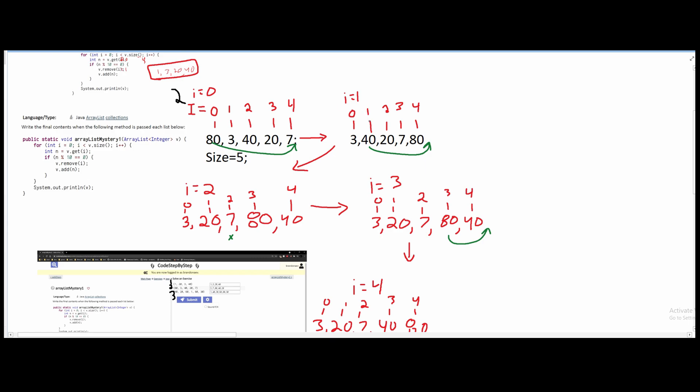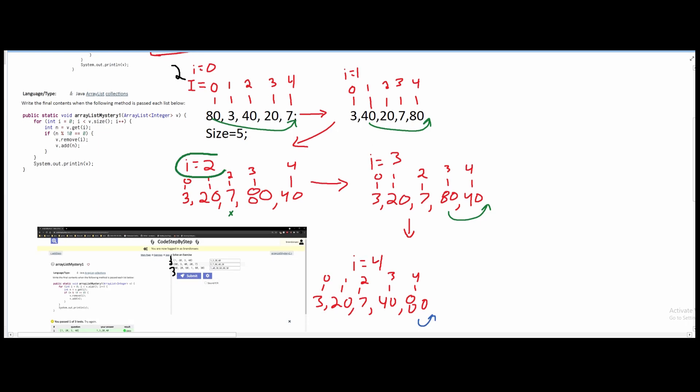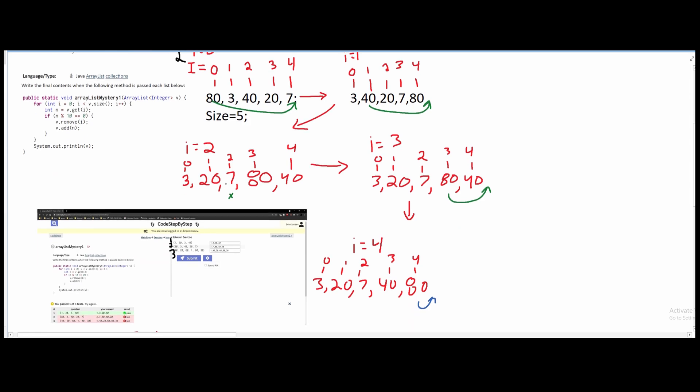Now we're going to look at index 1. Index 1 is also even, it's 40. So we're going to push it back here behind 80. Now we're looking at index 2.